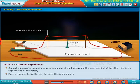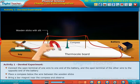Place a compass below the wire between the wooden sticks. Bring a bar magnet near the compass and observe.